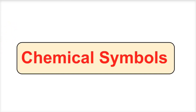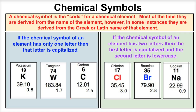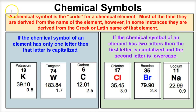Hey you guys, this is Mr. Millings, and today we're going to learn about chemical symbols. So what are chemical symbols and how do they work? A chemical symbol is the code for a chemical element, and most of the time they are derived from the name of the element. However, in some instances they are derived from the Greek or Latin name of that element.